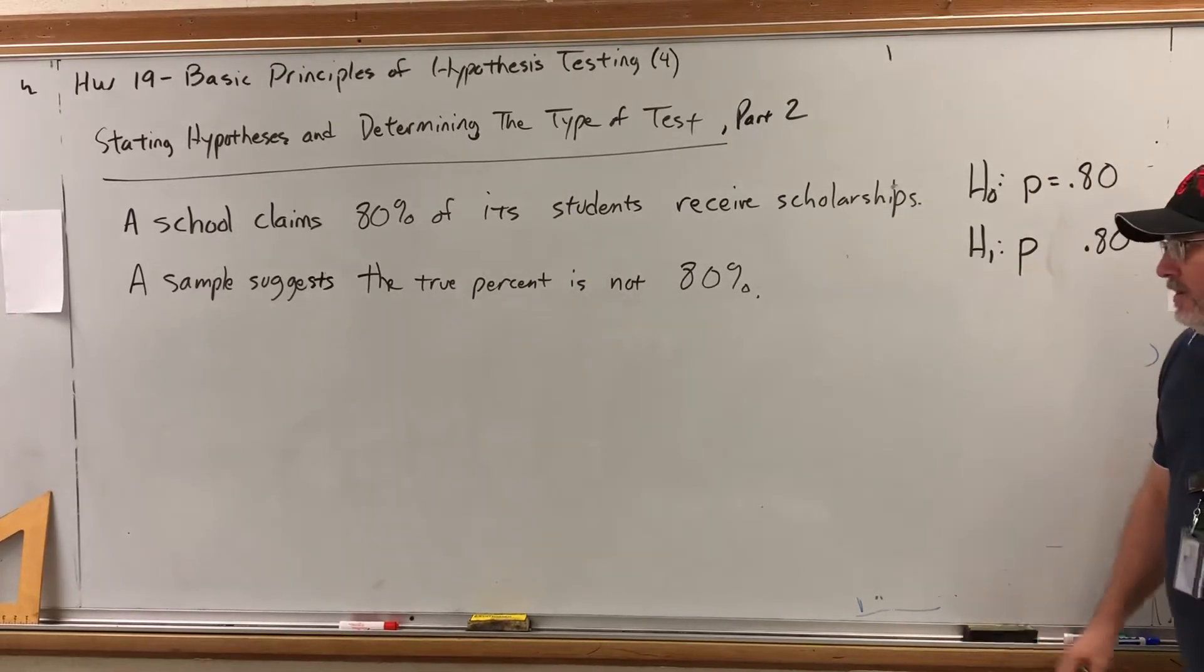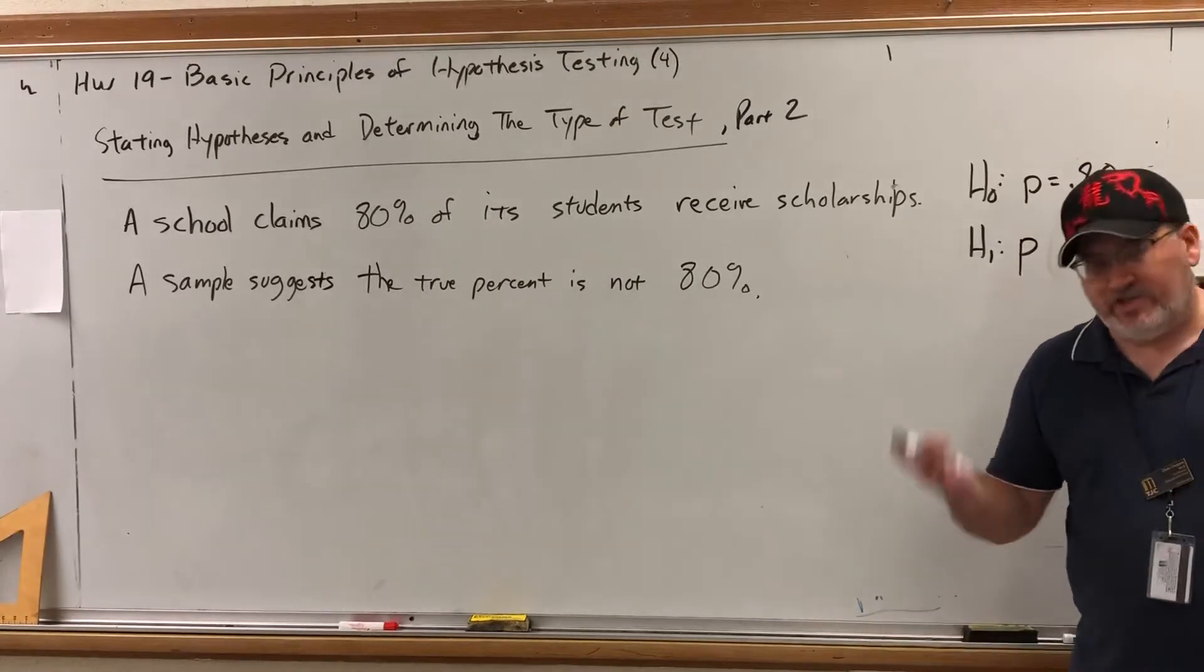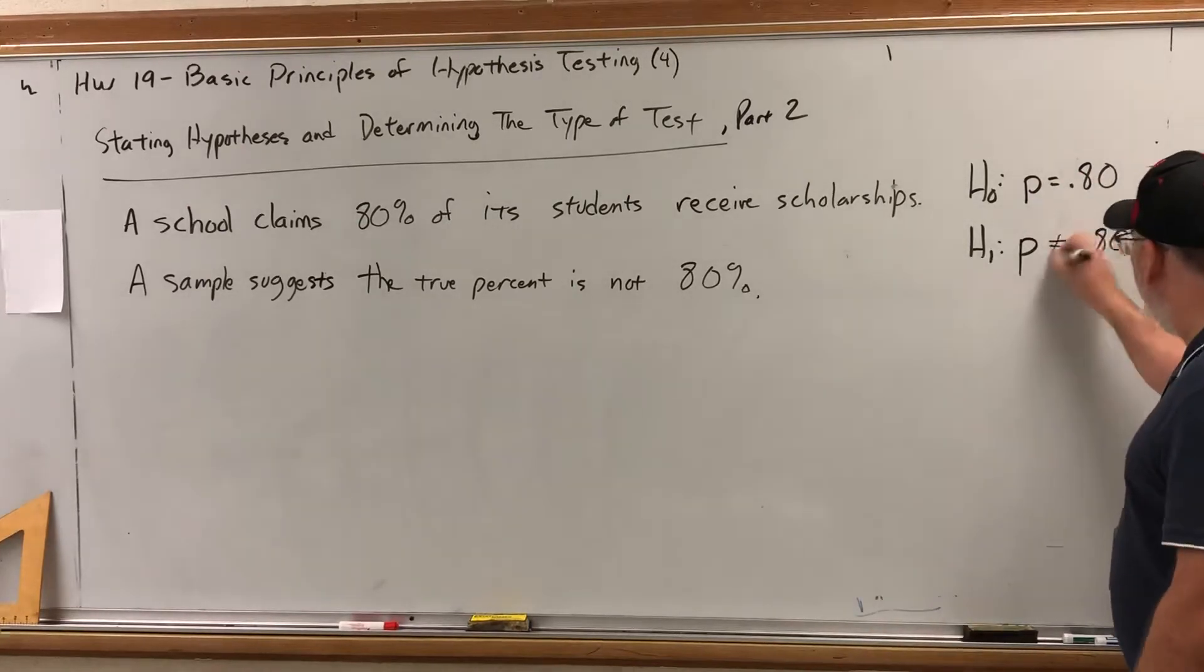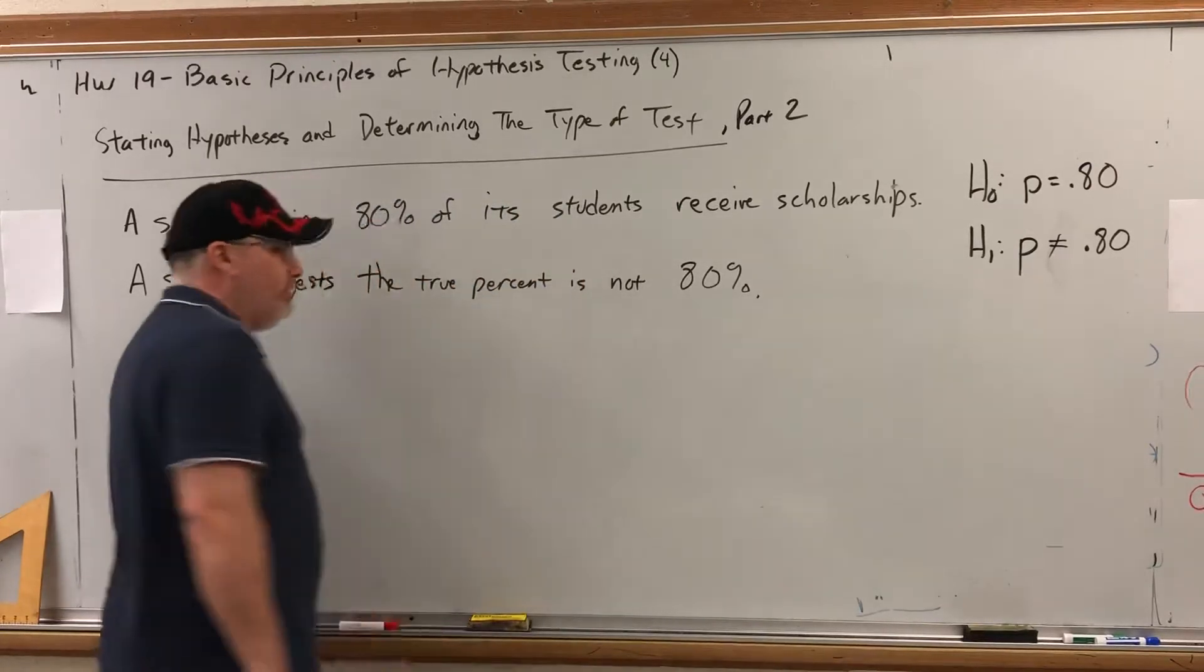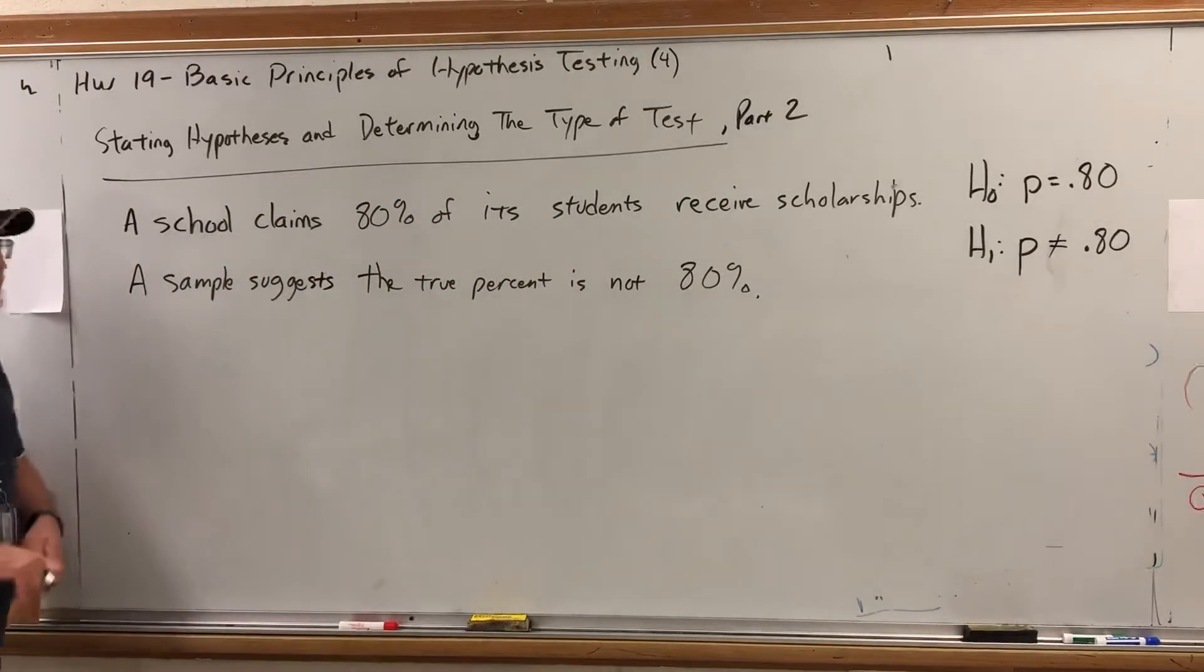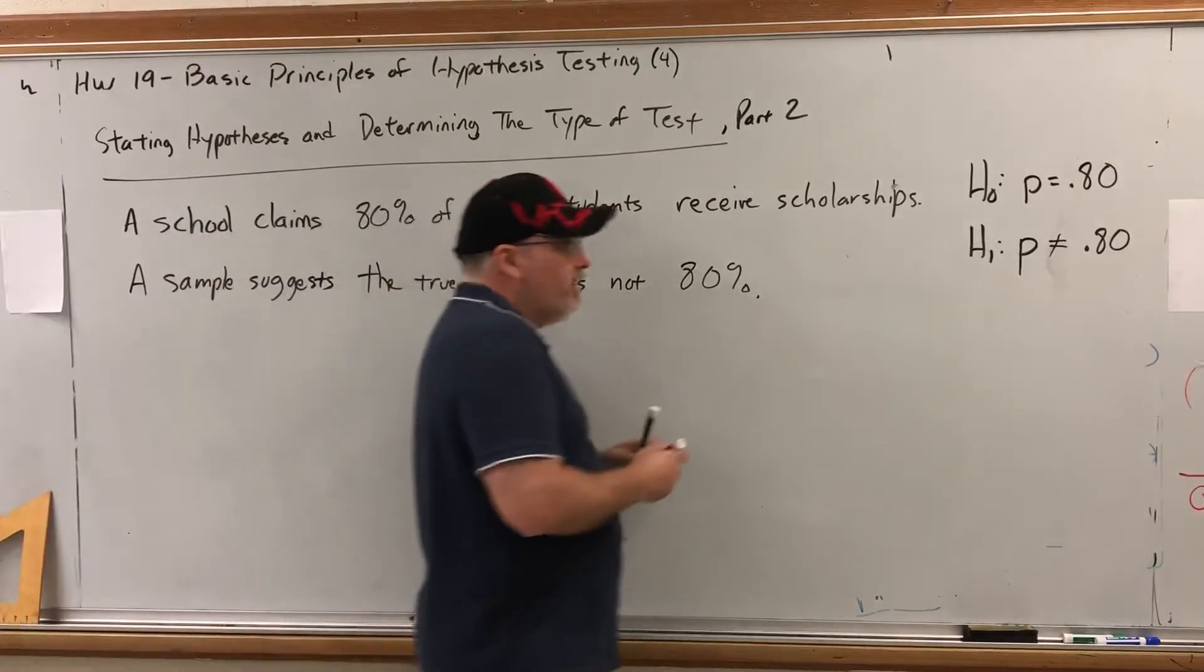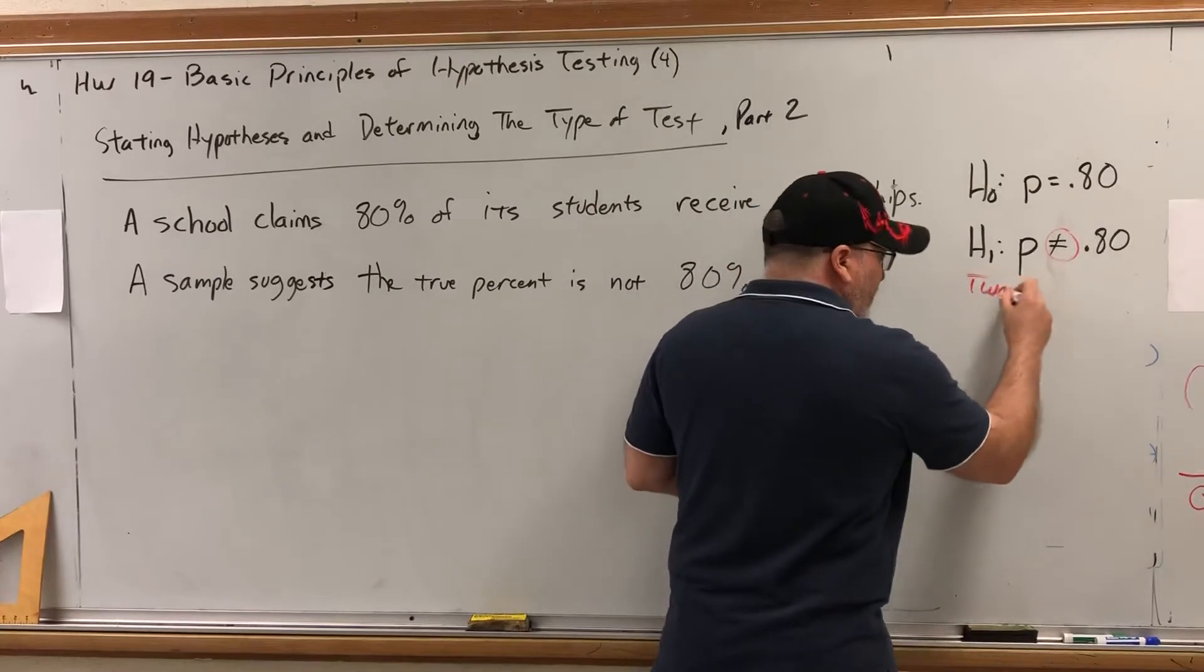So when a suggested alternative hypothesis does not indicate greater than or less than, either contextually or explicitly, you go with not equals, is not equal to. Maybe that one was a little more transparent. Left tail, right tail, or two tail? Well, if the alternative hypothesis has not equal to, this is a two-tail test.